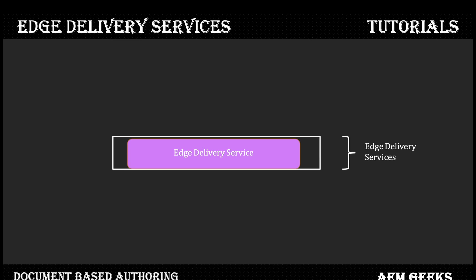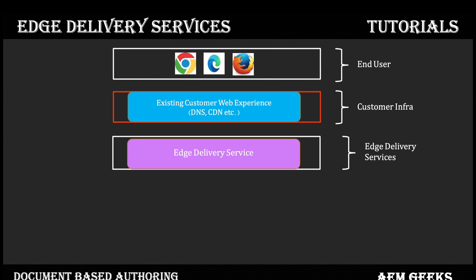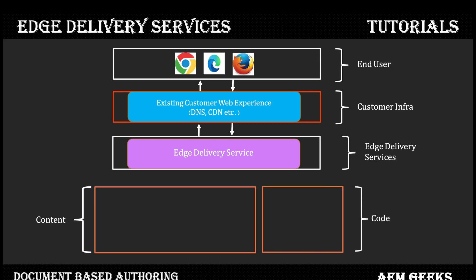Edge Delivery Services infrastructure is built on the cloud as a serverless infrastructure. It stores the customer's code and configuration, and converts your documents to hypermedia or HTML. On top of that, customers have their own existing infrastructure — their own CDN, DNS, etc. — and finally we have the end user. To run a website you need two things: content and code. If we are not using AEM, how do we create content and manage code? That is the key question for Edge Delivery Services.